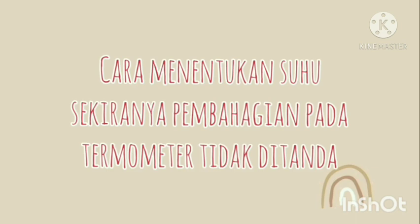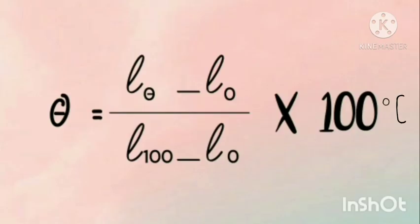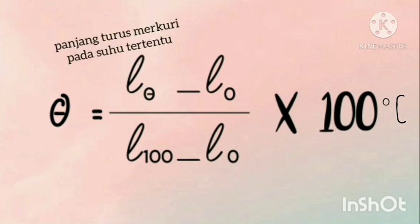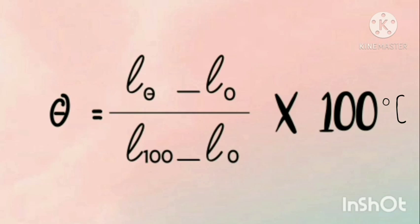Cara menentukan suhu sekiranya pembahagian pada termometer tidak ditanda, kita boleh menggunakan formula. L-theta mewakili panjang turus merkuri pada suhu tertentu. L-sifar mewakili panjang turus merkuri dalam ais lebur. L-100 mewakili panjang turus merkuri dalam stim.